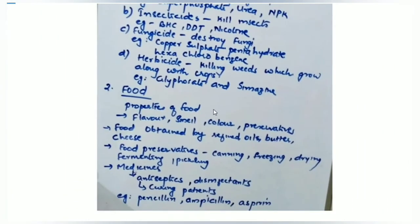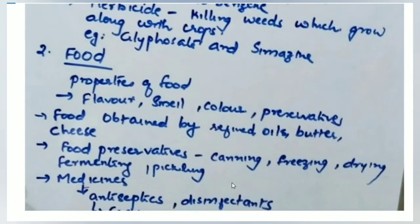Chemicals in food are used to enhance flavor, smell, color, and preservation. Food is also obtained from refined oils, butter, and cheese. Food preservation methods include canning, freezing, drying, fermenting, and pickling.